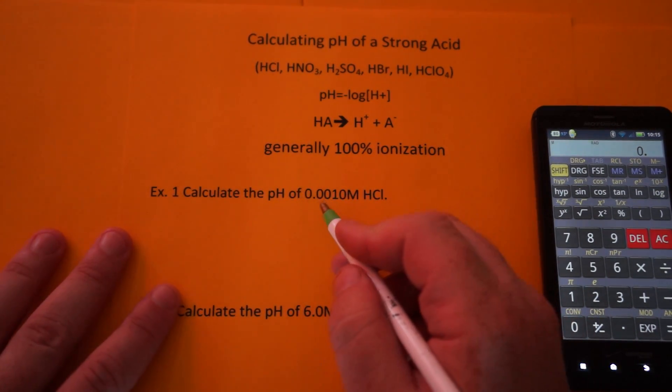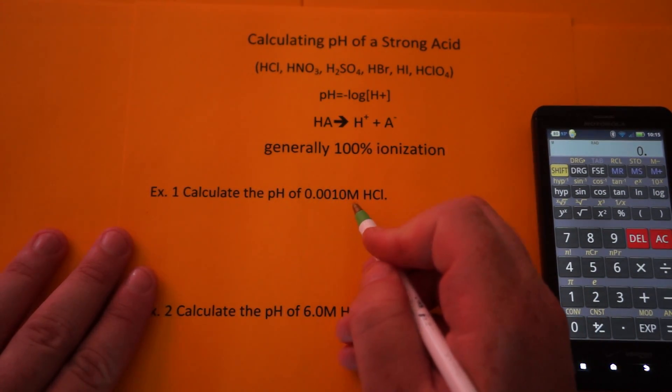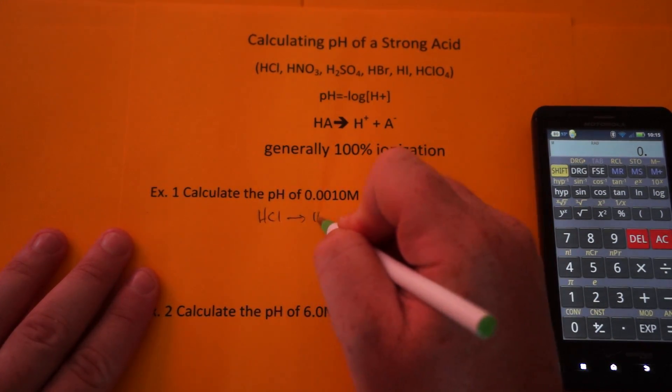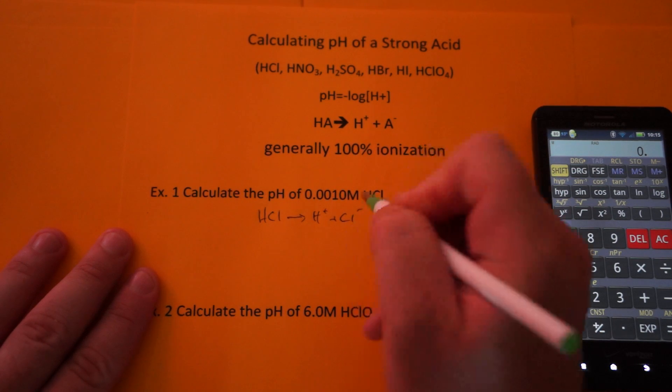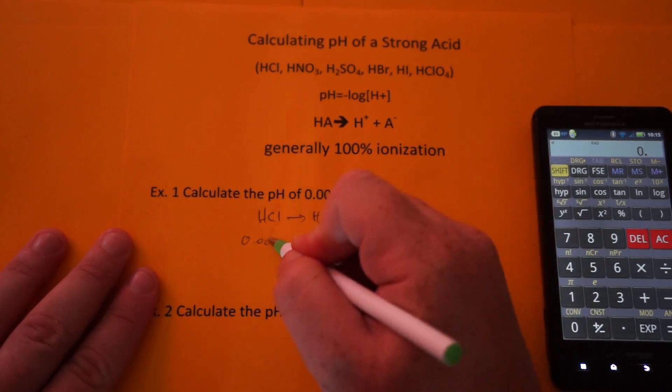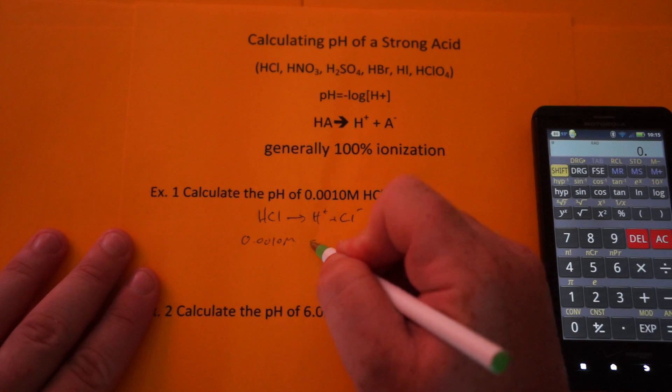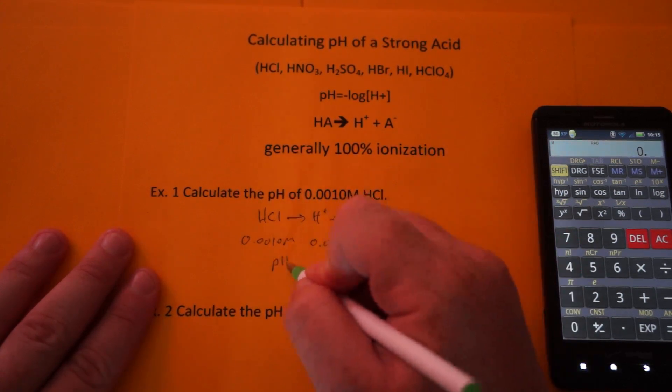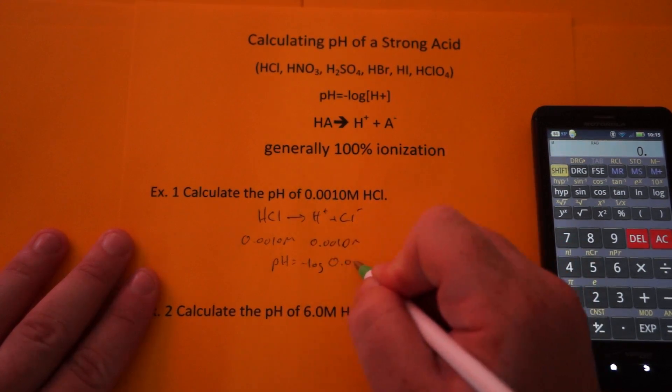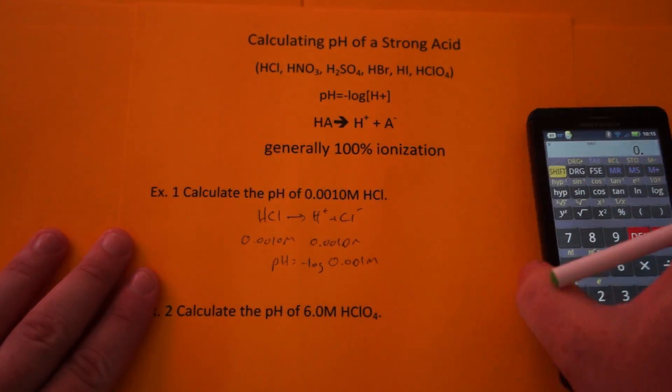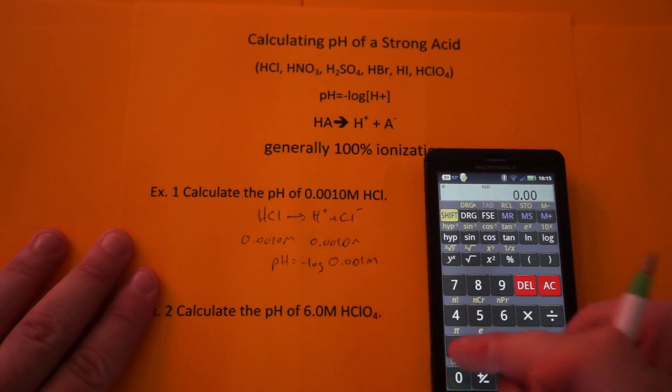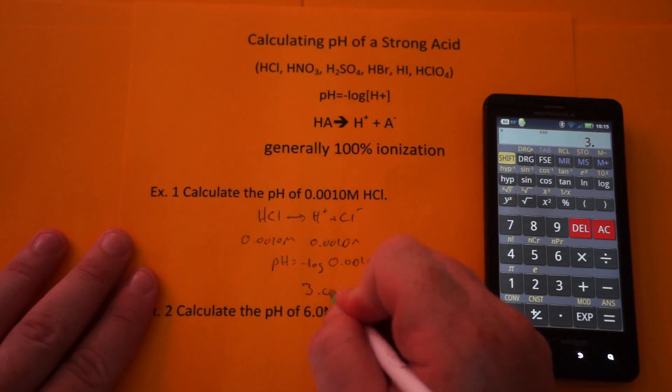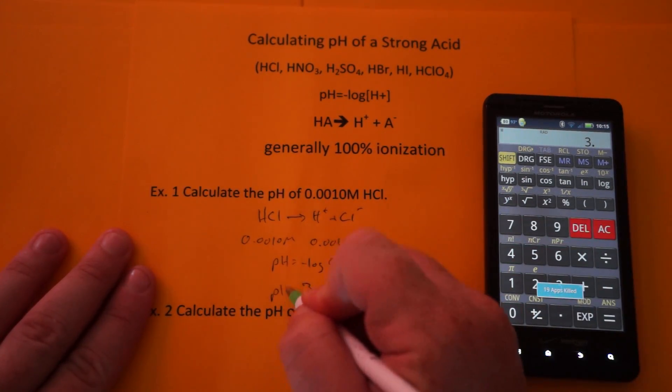For example number one, calculate the pH of 0.001 molar HCl. HCl will break up 100% into H+ and Cl-, which means if this is 0.001 molar, then the H+ is 0.001 molar. All I have to do is take the negative log of 0.001. So 0.001, log, and make it negative, and you get 3. pH equals 3.00.